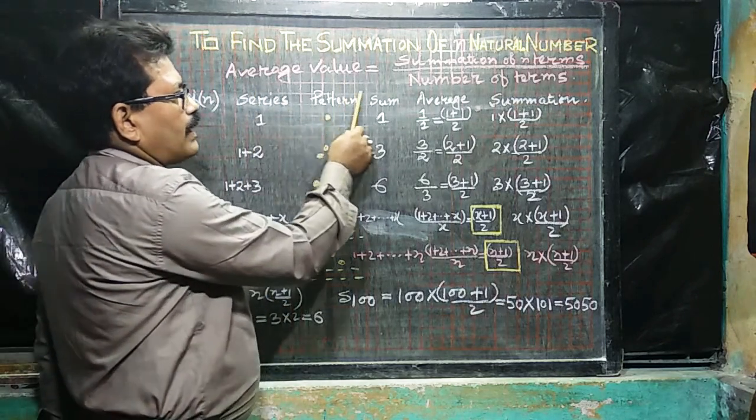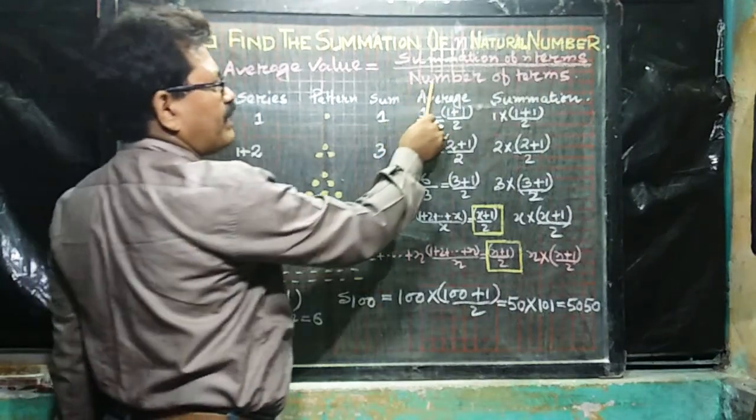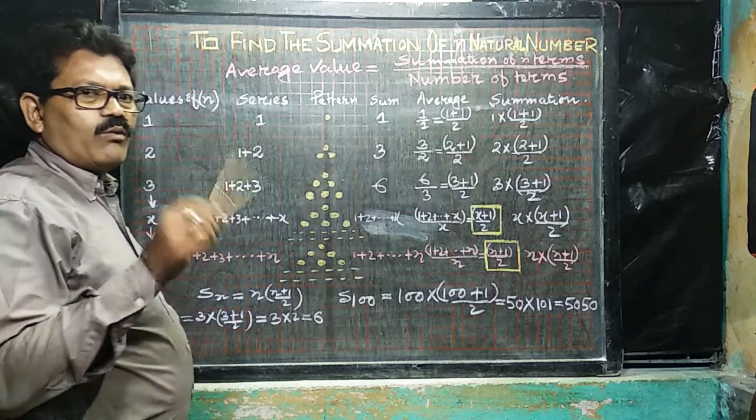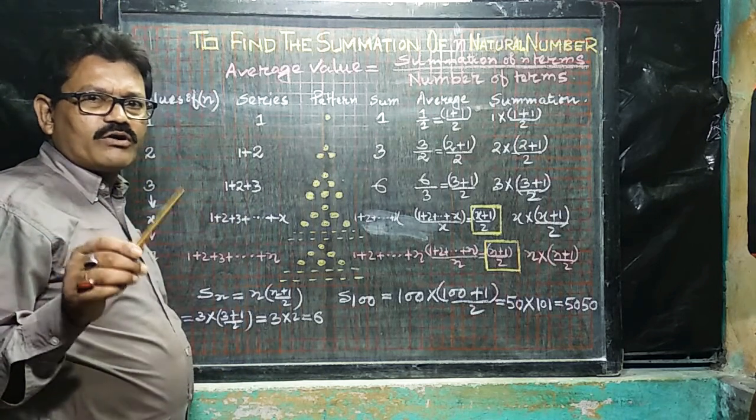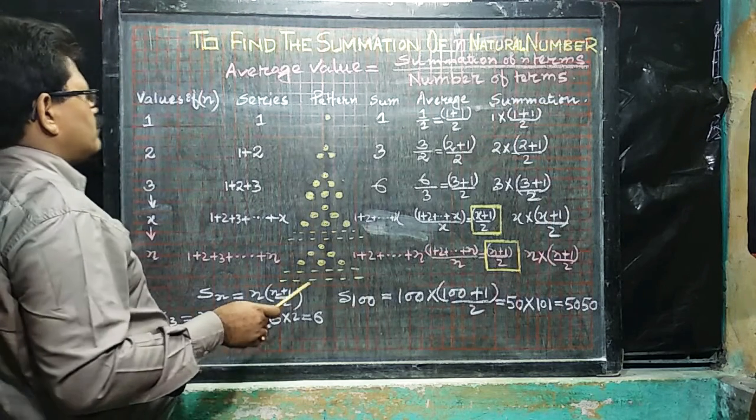As we know, summation of n terms divided by number of terms. Say for example, 1 to 10, so 1 plus 2 plus 3 plus 4 dot dot dot 10, divided by 10, that is the average value.